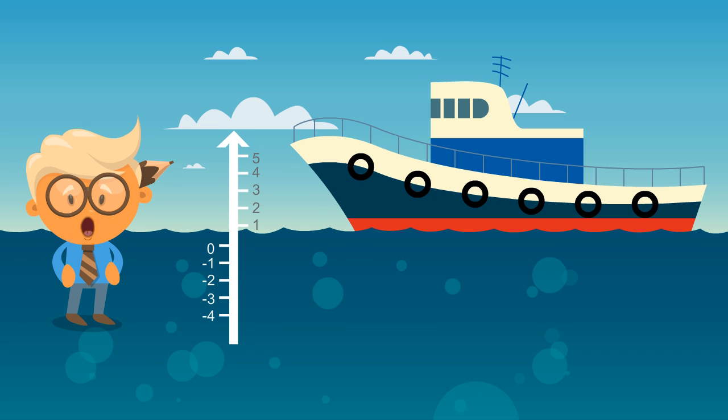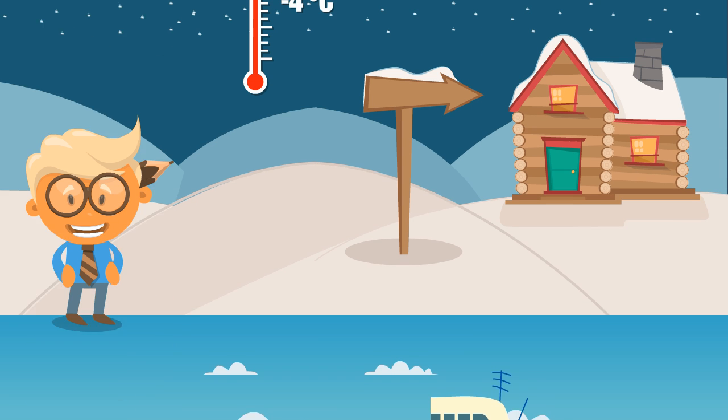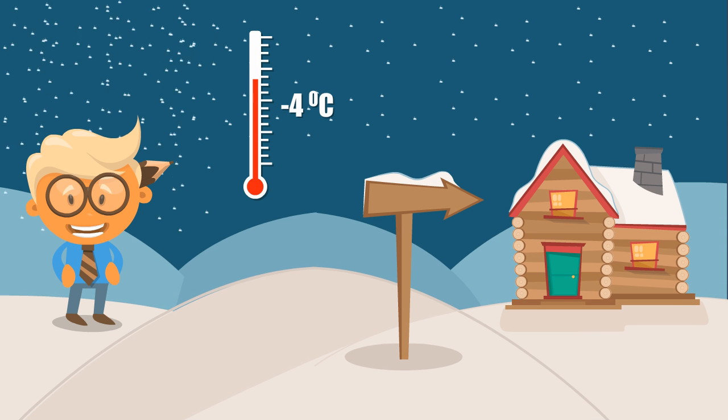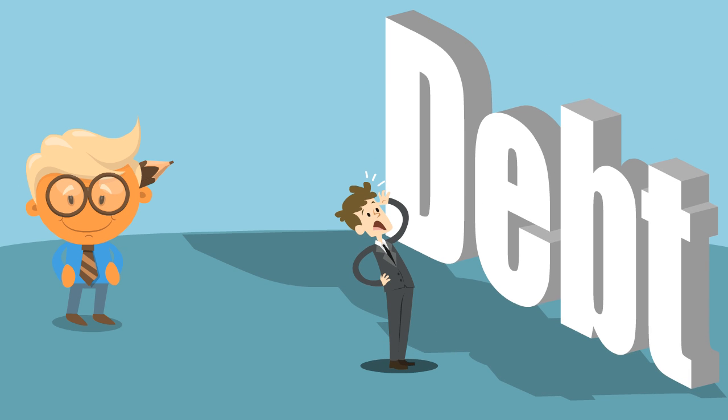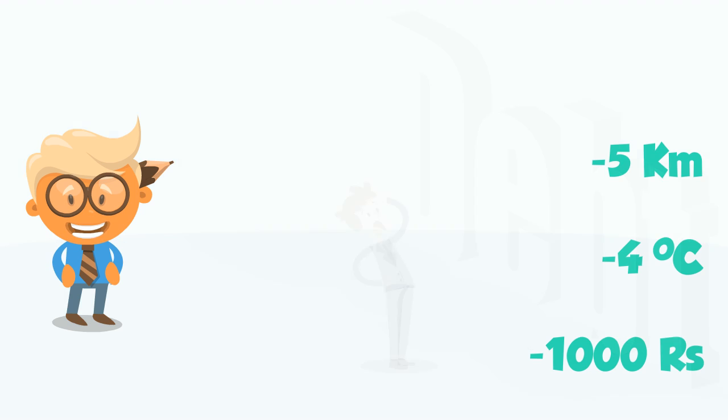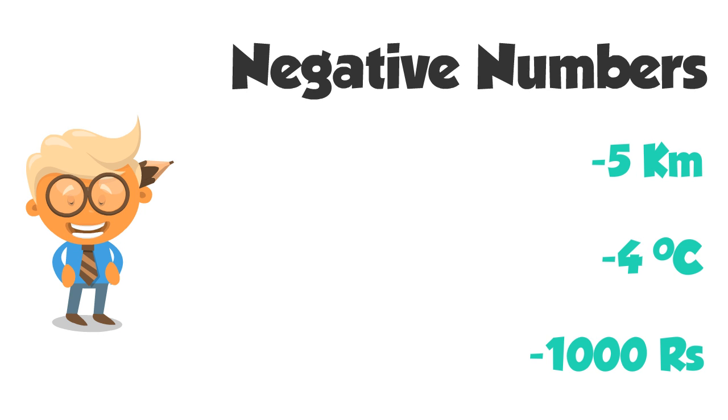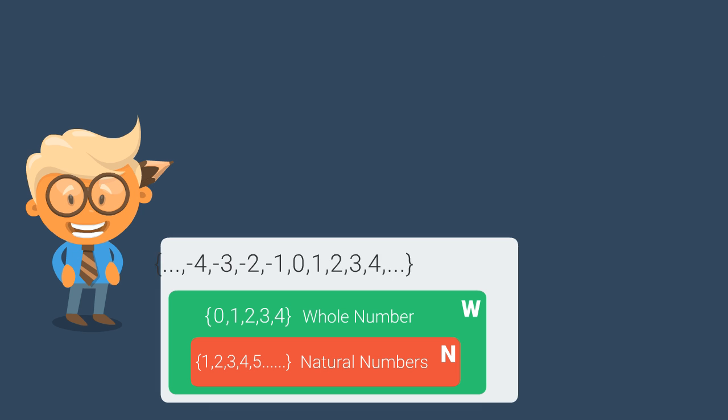For example, when you have to measure the depth of a ship below sea level, when the temperature drops to sub-zero under chilly conditions, and of course, when you owe money to the bank. In all such cases, the numbers are called negative numbers, which when clubbed together with whole numbers, form a group called integers, strangely denoted by letter Z.